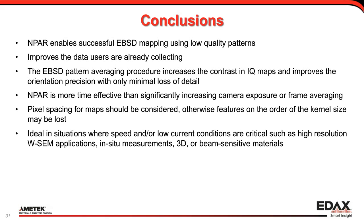Pixel spacing for maps should be considered — features on the size of the kernel will be averaged out and could disappear. The application of NPAR is ideal in situations where speed or low beam current conditions are critical or you're restricted to those conditions, like the brachiopod where you just can't put any more energy into the sample. This applies to high-resolution tungsten SEM conditions with low beam current and small spot size, in-situ measurements where you have to move along and collect data quickly, 3D EBSD where you want to minimize time across many sections, or beam-sensitive samples. In all these situations, NPAR lets you start with as low quality as you can tolerate and get as high quality data out as possible.